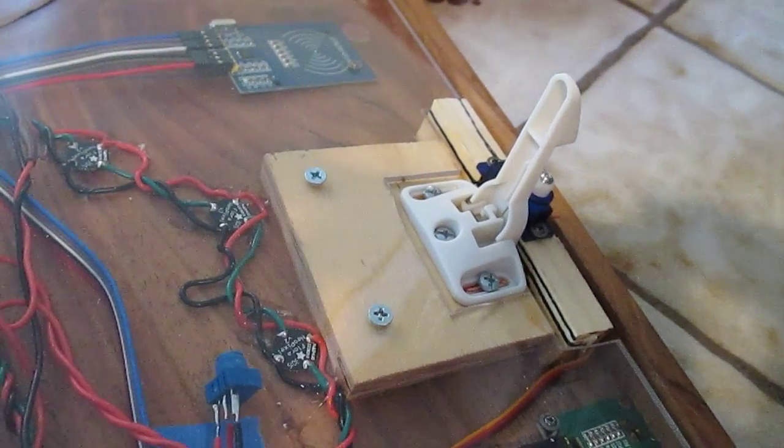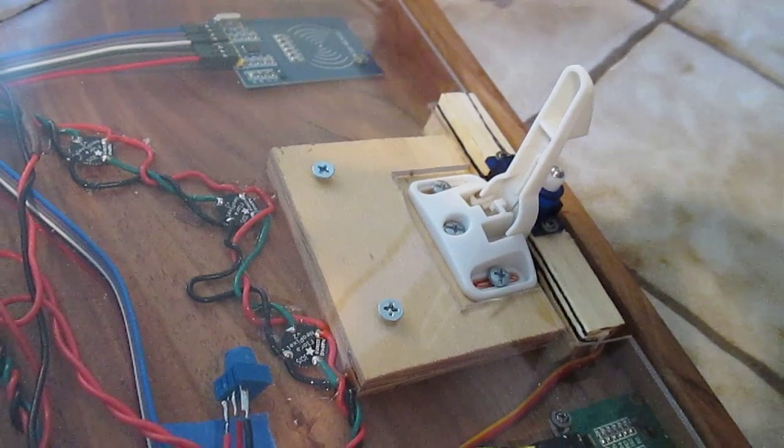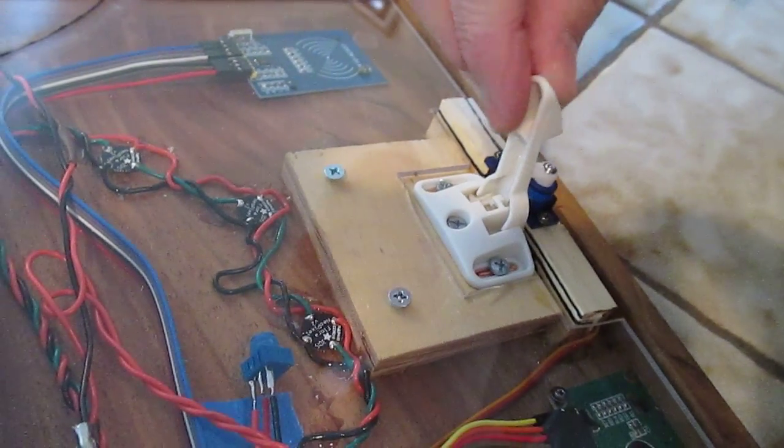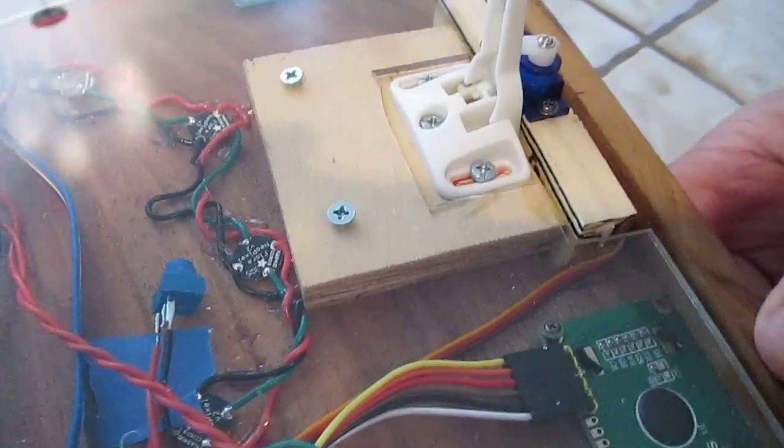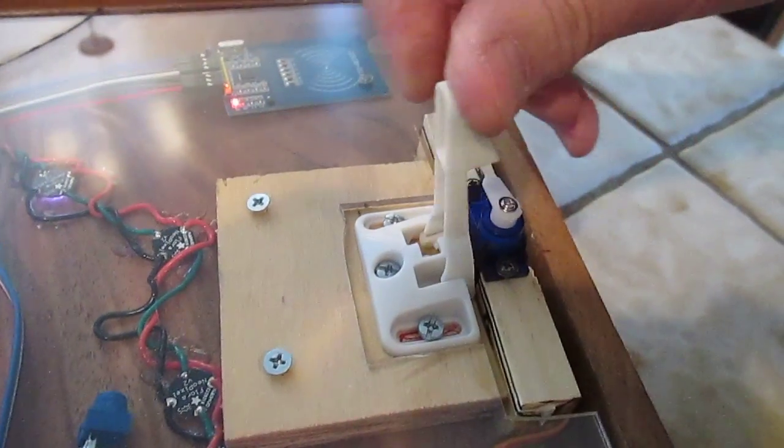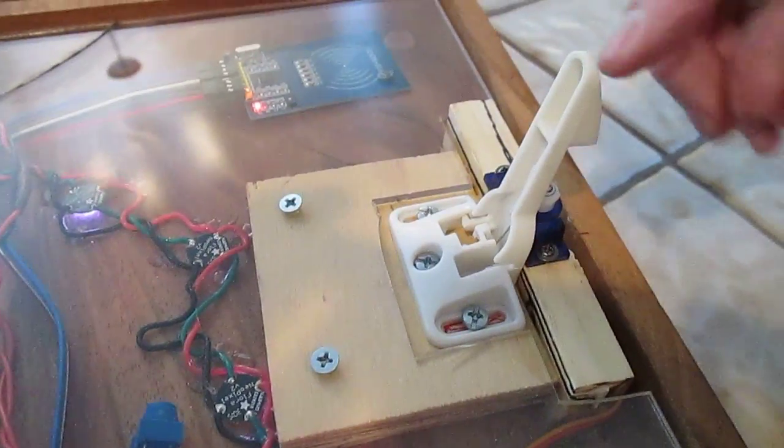All right, we're going to talk about a baby latch for geocaches. This is a little spring-loaded latch with a servo here. So this is a spring-loaded latch. Now what we need to do on the geocache—I'll show you the whole box. This is a box and it needs to latch